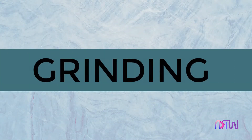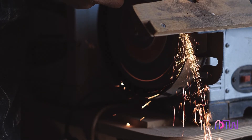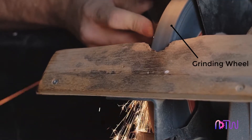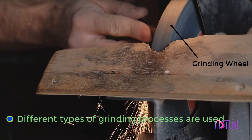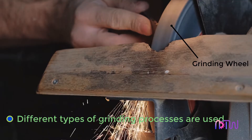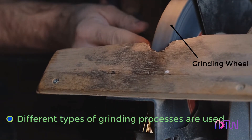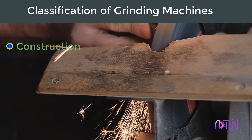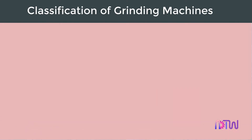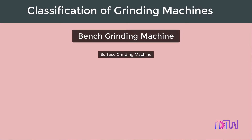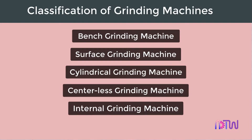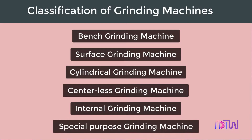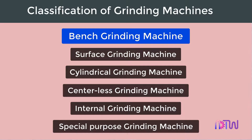Grinding is a method of material removal using a grinding wheel or grinder as a cutting tool. Different types of grinding processes are used in industries for material removal purposes. Grinding machines are classified based on their construction or type of surface produced, such as bench, surface, cylindrical, centerless, internal, and special purpose grinding machines. In this video we will see the construction details of the bench grinder and the surface grinder.